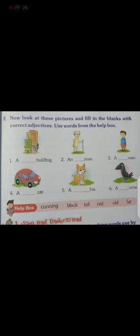Let us see the first picture. A dash building. What kind of building? Black, tall, red, old, or fat? Yes, tall. Tall building. Next, an dash man. Look at the picture, how is the man? Old. An old man. The adjective old describes the man's quality.